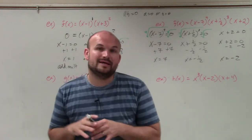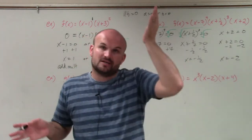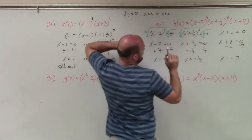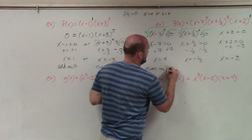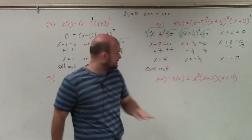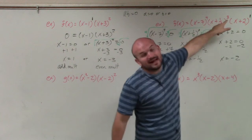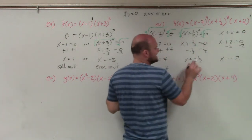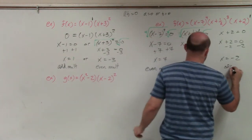Now we look at multiplicity. Going back to the factors: (x minus 7) has a power of 4, which is even — so the graph will touch x equals 7 and rebound. (x plus one-half) has a power of 3, which is odd — so the graph will cross at x equals negative one-half. And (x plus 2) has a power of 1, also odd — so the graph will cross at x equals negative 2.